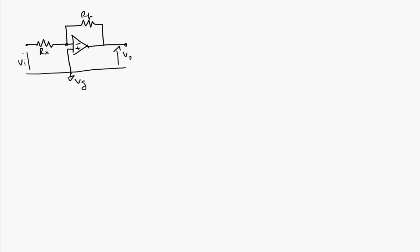The difference between VG and these terminals, these nodes in the circuit. And we showed before that the gain was VOUT over VIN is equal to minus RF over RX because it's an inverting amplifier.